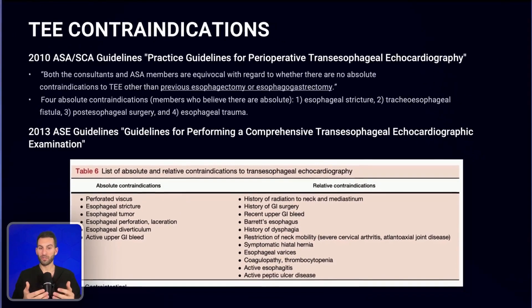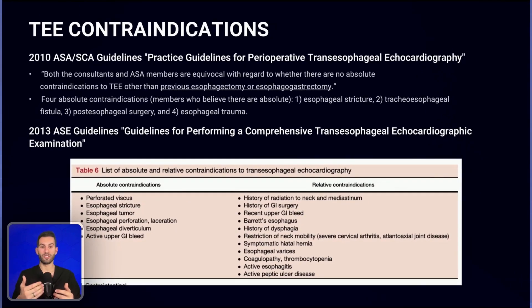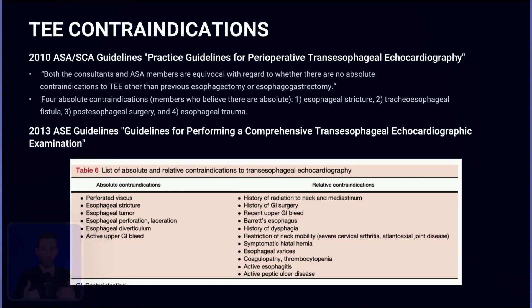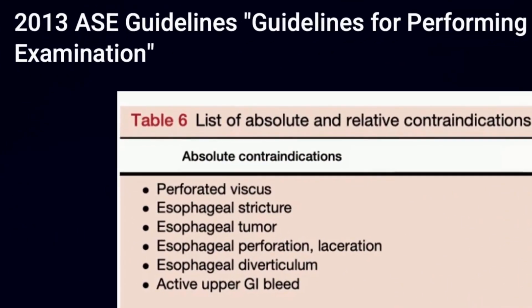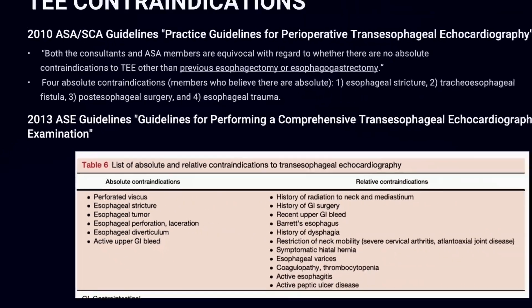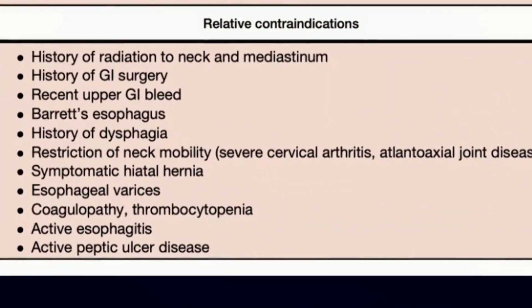Some members agreed that esophageal strictures, TEE fistulas, post-esophageal surgery, and esophageal trauma could be listed as absolute contraindications. However, in the 2013 ASA guidelines, you'll see esophageal stricture, tumor, active upper GI bleed, and esophageal diverticulum listed — slightly different — along with a number of relative contraindications.